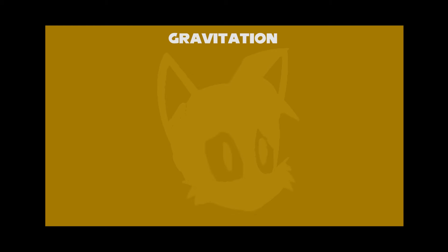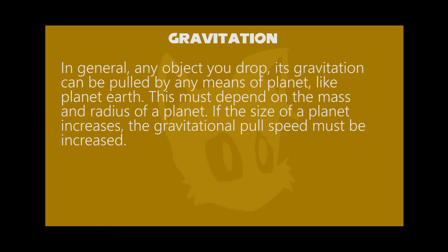Any object you drop, its gravitation will pull it down by any means of planet. On Earth, as I recently told you, it's 9.8 meters per second squared. It must depend on the radius and mass of a planet. If the radius or mass of a planet has increased, the gravitational pull must also be increased.